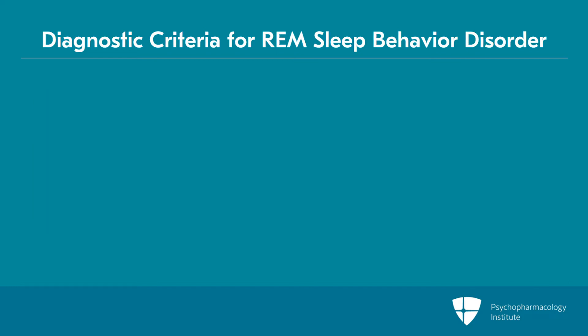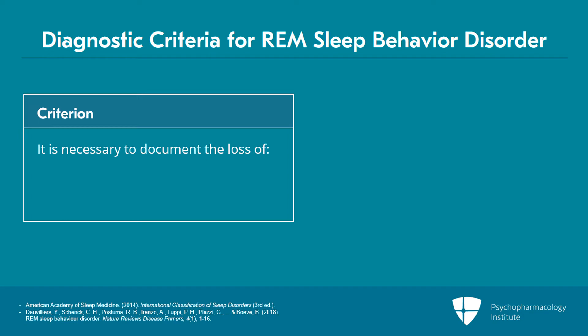REM sleep behavior disorder is the only parasomnia for which video polysomnography is required. It is necessary to document the loss of the customary skeletal muscle paralysis, or REM atonia, of mammalian REM sleep. This is critical — an objective diagnosis is needed to document and diagnose REM sleep behavior disorder.